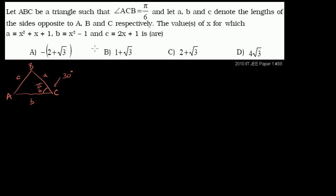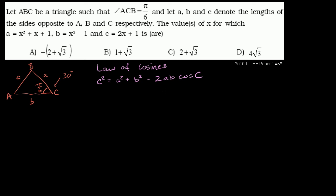So let's think about it. We need to find a relationship between a, b, and c and this angle. Once we have that relationship, we can substitute them with these expressions and essentially try to solve for x. The first thing to think about is how to relate the lengths a, b, c with this angle — and the law of cosines should pop into your brain. Law of cosines tells us that c² = a² + b² minus 2ab times the cosine of C. It's essentially the Pythagorean theorem with an adjustment, because this isn't a right triangle.